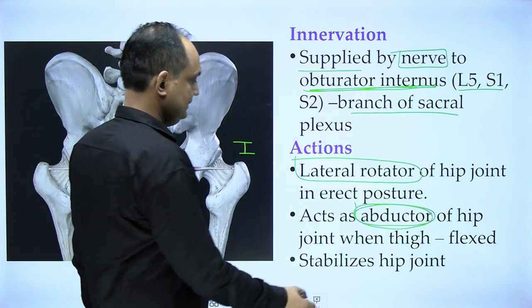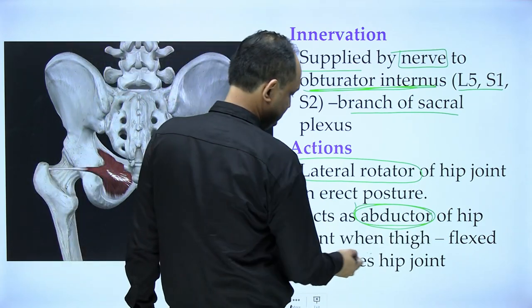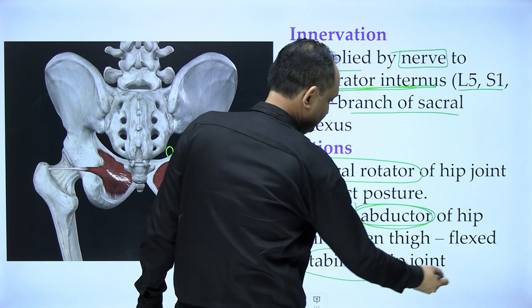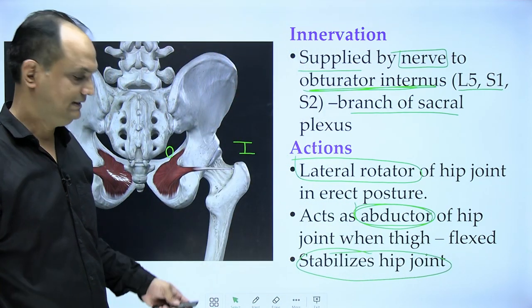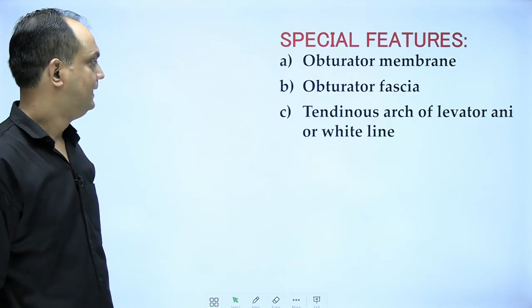Additionally, because obturator internus supports the hip joint from the posterior side, it also stabilizes the hip joint.